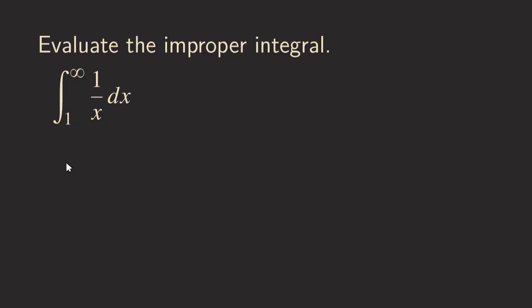The way that we are going to start is by using the definition. We write this improper integral as a limit of a definite integral — the definite integral from 1 to b, where b is approaching infinity — with the same integrand, 1 over x.